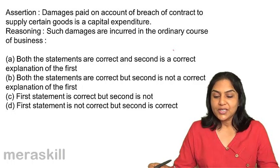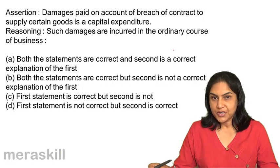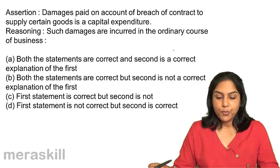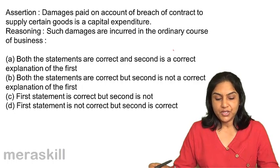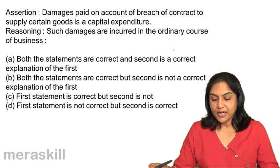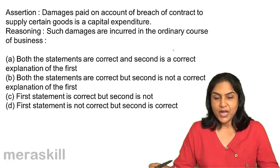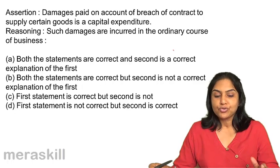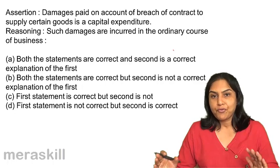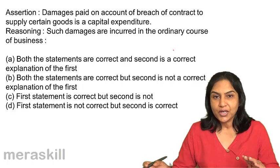What are our options? A: Both the statements are correct, and the second is a correct explanation of the first. B: Both the statements are correct, but the second is not a correct explanation of the first. C: First statement is correct, the second is not. And D: First statement is not correct, but the second is correct. Take a little time, look at the two sentences, and see which are correct.